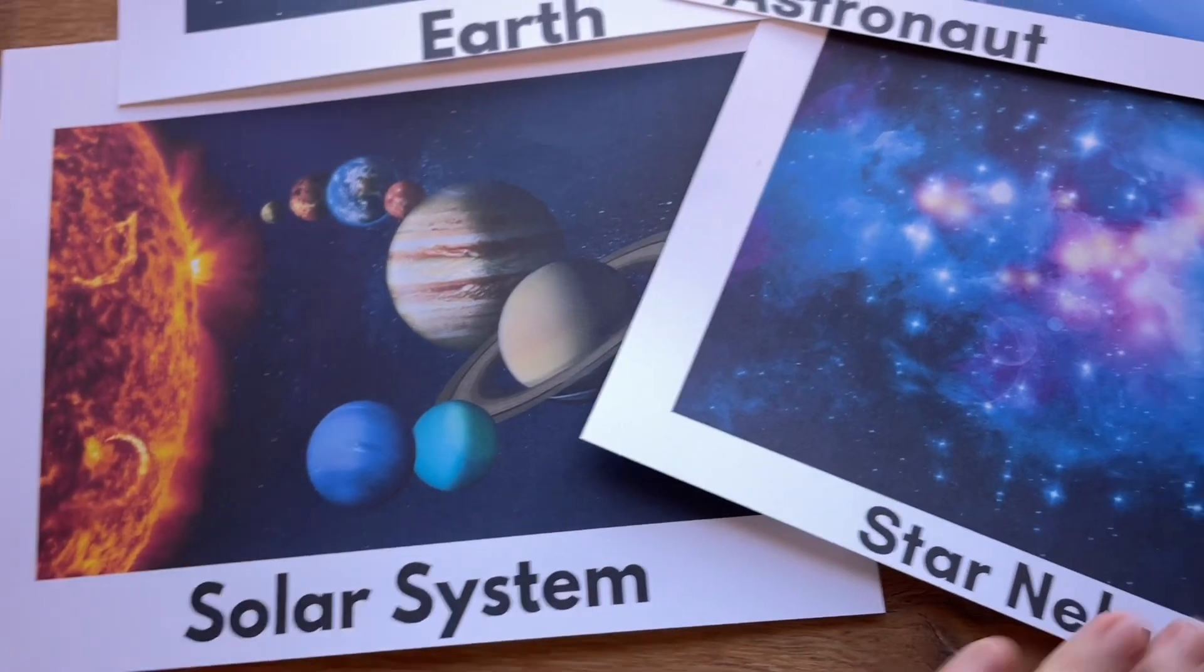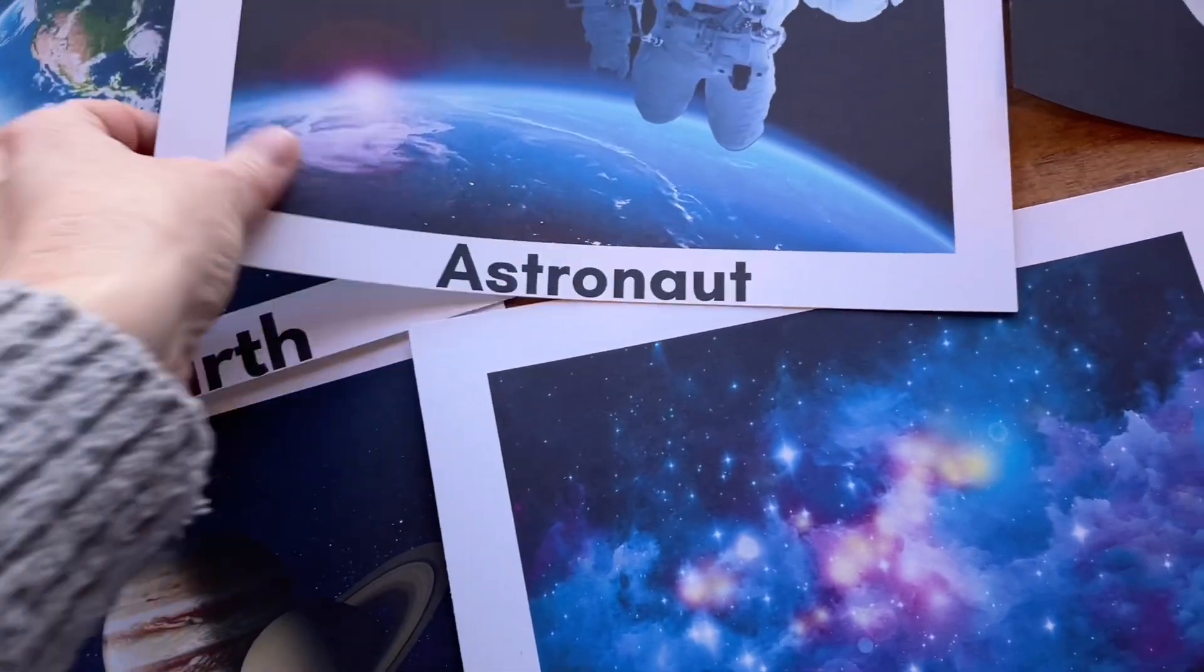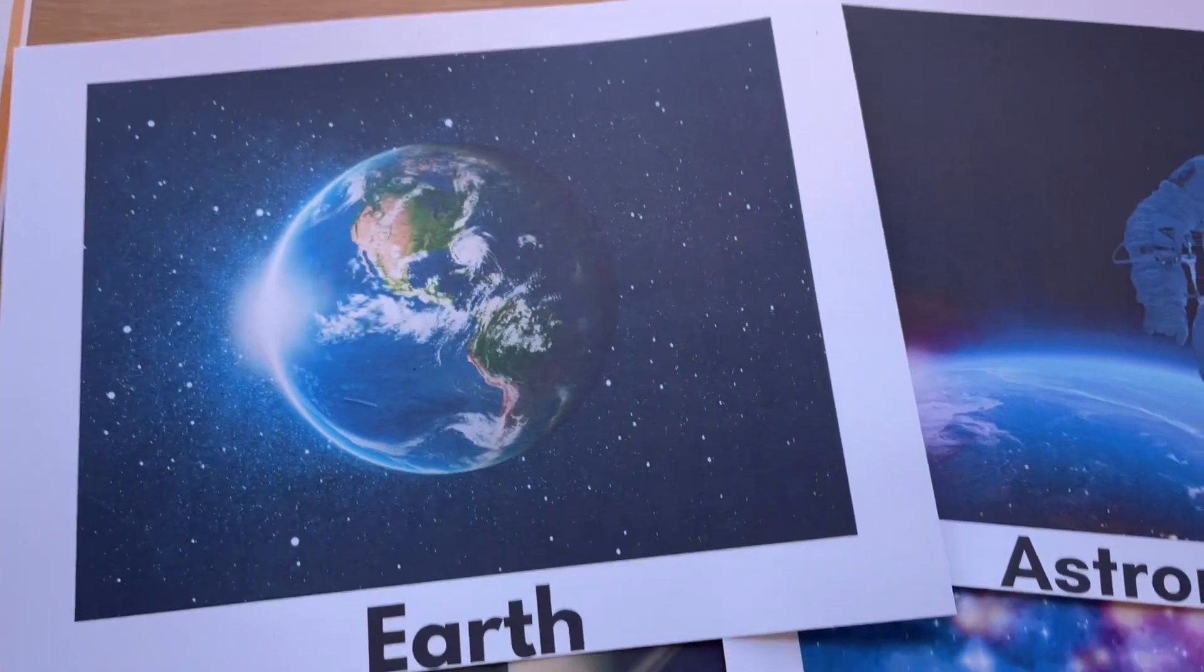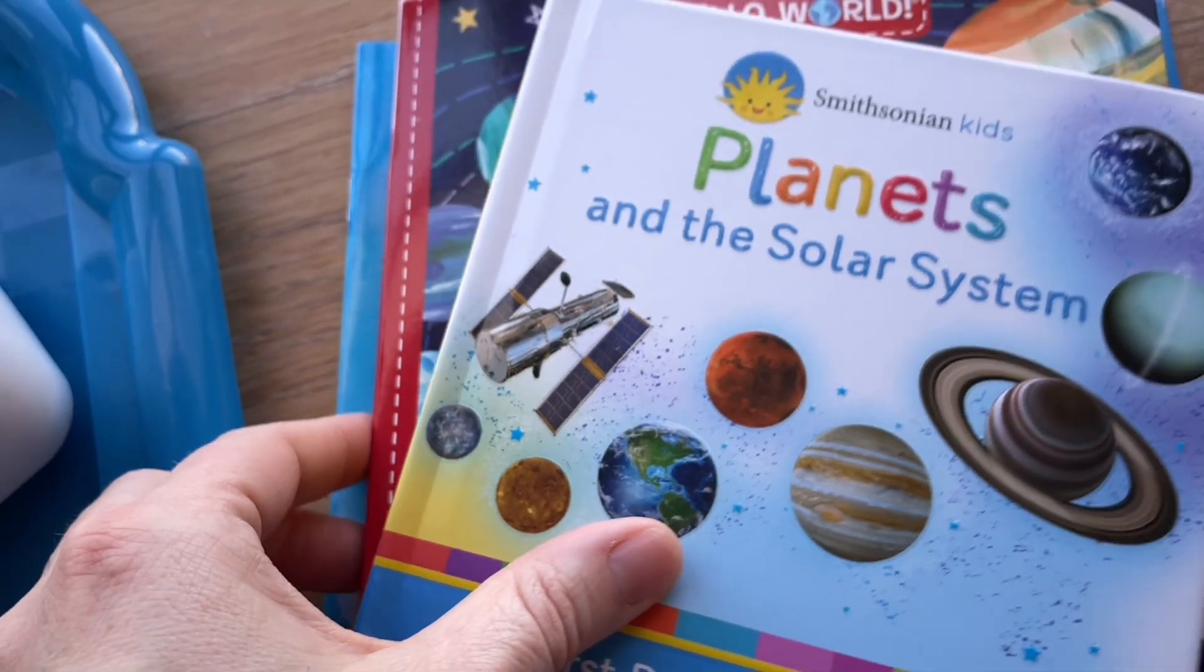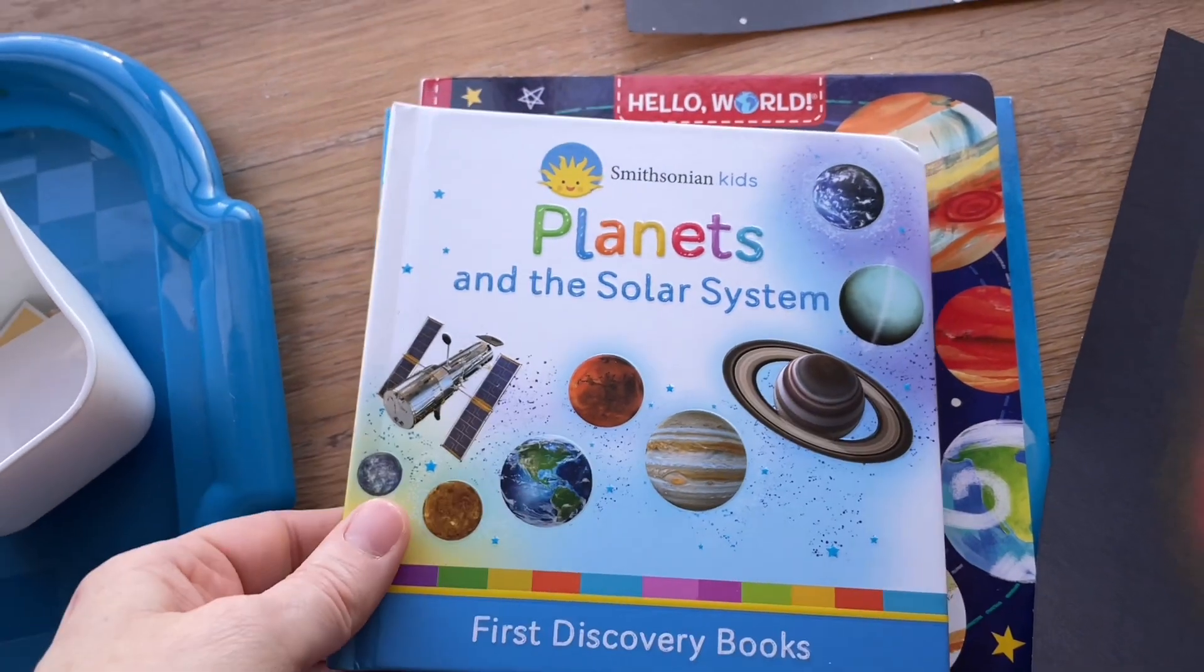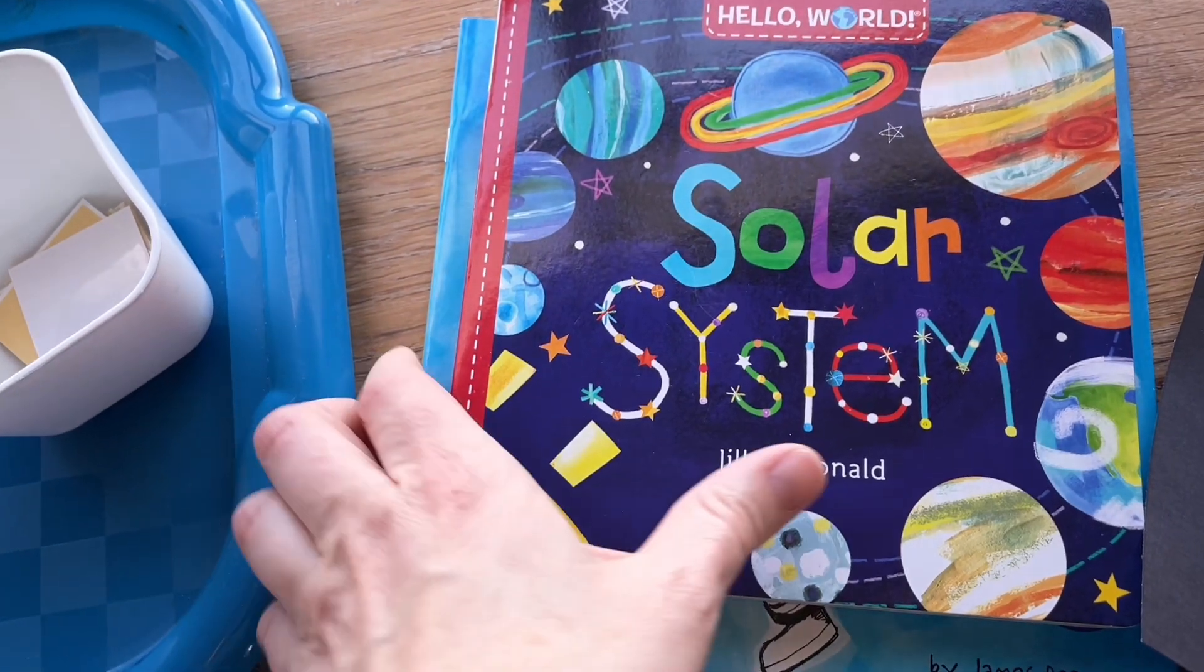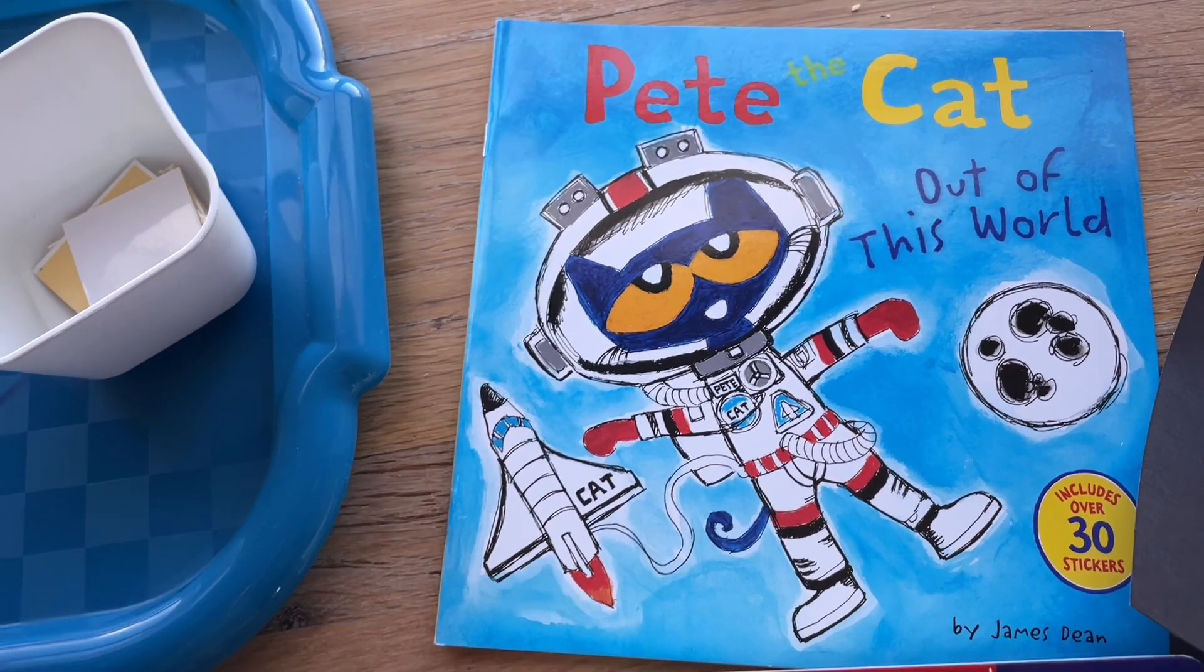First off, I've created some real images here and those are going to be in a downloadable packet that I'll put the link below. The books that we'll be reading in our library are Smithsonian Kids Planets and the Solar System, Hello World Solar System, and Pete the Cat Out of This World. We'll have a lot of fun with those in the library.